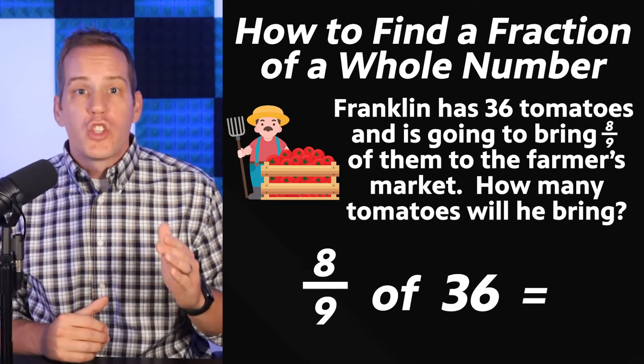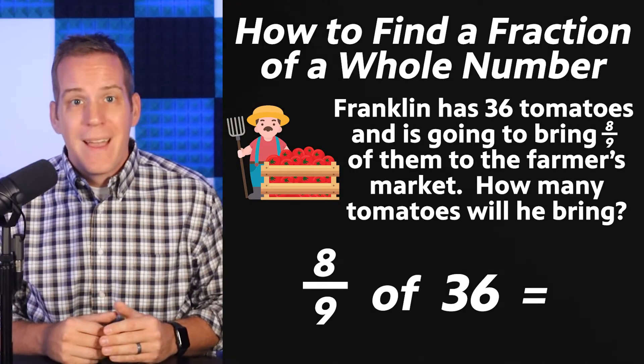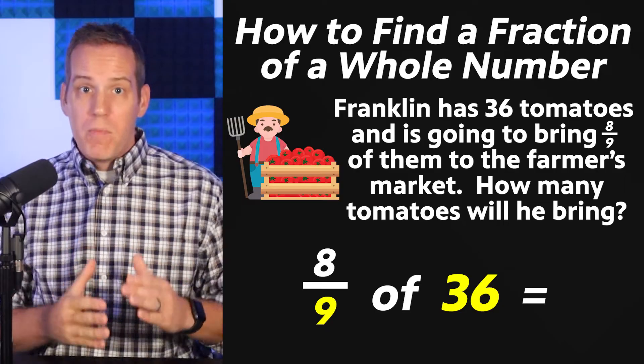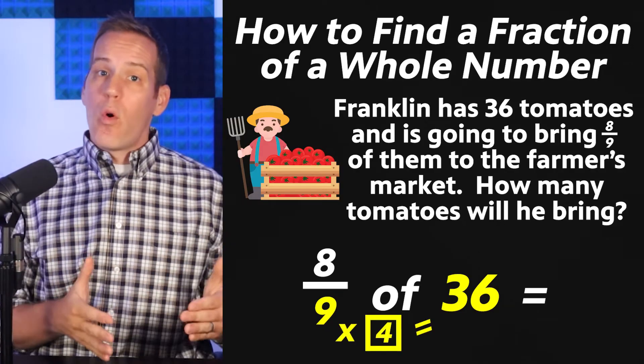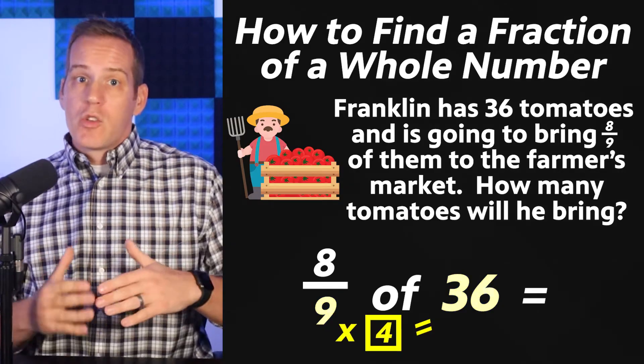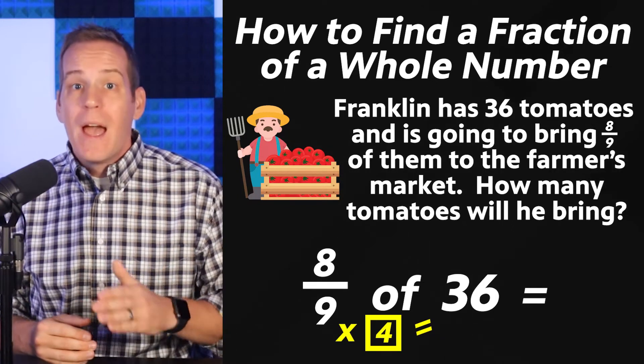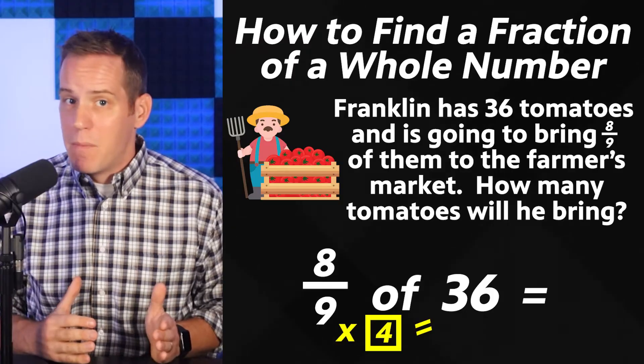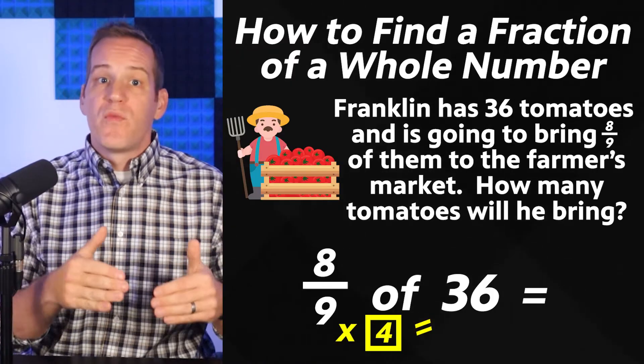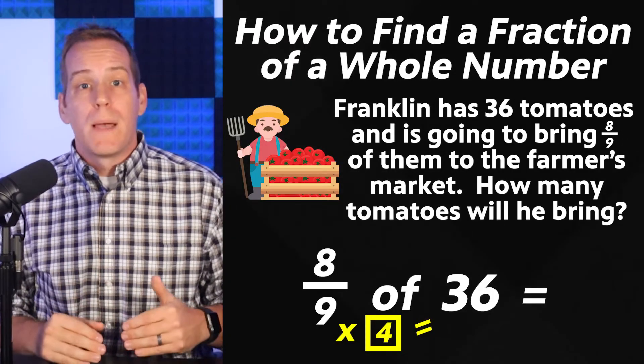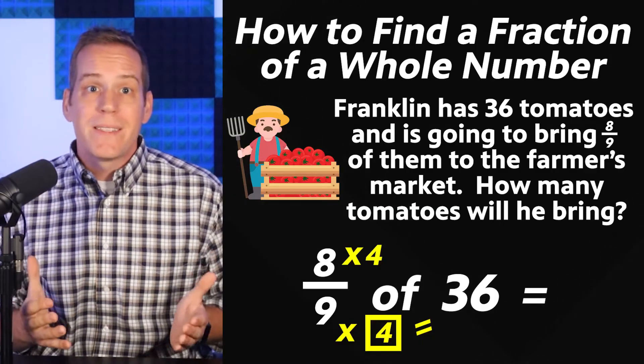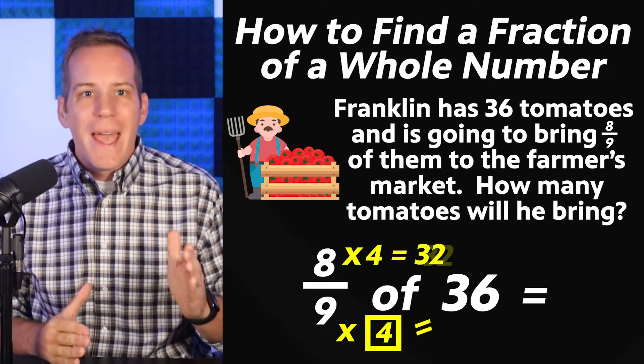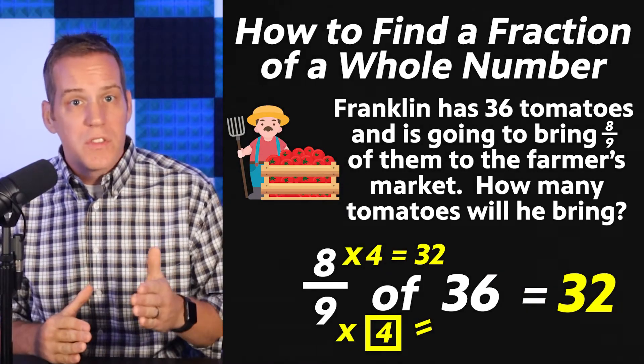Start by looking at the denominator and the whole number. Can 9 go into 36 perfectly? You bet it can. 9 times 4 equals 36. So I'm gonna put a times 4 next to the 9. And just like before whatever I do to the bottom number I'll do to the top number. So if I do times 4 on the bottom I'm gonna do times 4 on the top. So what is 8 times 4? 32. And that's the answer. 8 ninths of 36 equals 32.